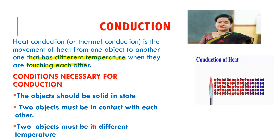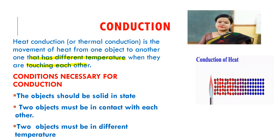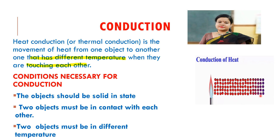Why is conduction possible only in solids? Molecules of solids are tightly packed with no intermolecular space, so they cannot leave their place and move freely. When heat is supplied, the molecule near the heat source becomes hot — energy increases — and then delivers energy to the nearby molecule, and so on. This is how conduction of heat takes place.